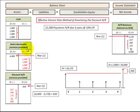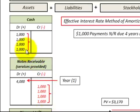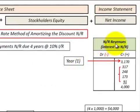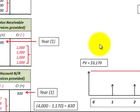Let's look at the journal entries for notes receivable, which is an asset on the balance sheet. At the beginning of year one we debited notes receivable for $4,000. Each year that we received a payment on the notes receivable, we credited notes receivable to reduce it, with the associated debit being cash. Looking at our revenues earned — which is part of net income on the income statement — at the beginning of year one we recognized the $3,170 present value. Then each year we recognized our interest revenue earned, so at the end of year four the $3,170 present value plus interest earned equals $4,000, balancing with the notes receivable.